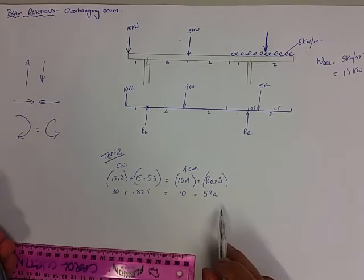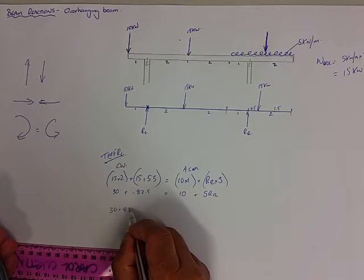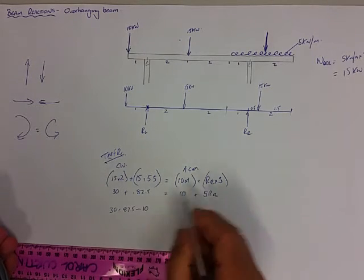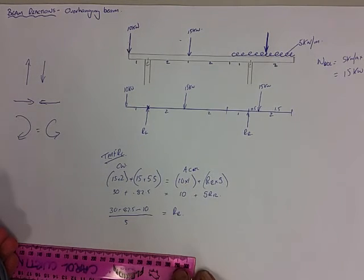So let's rearrange the formula. We're going to have 30 plus 82.5 minus the 10 we'll bring over. And then we'll divide all that by 5. And that will equal our RR.